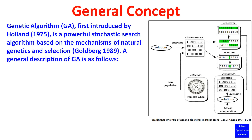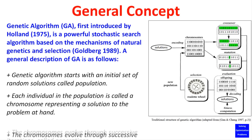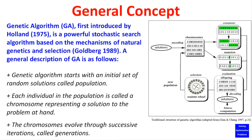A general description of genetic algorithm is as follows. Genetic algorithm starts with an initial set of random solutions, called population. Each individual in the population is called a chromosome, representing a solution to the problem at hand. The chromosomes evolve through successive iterations, called generations.